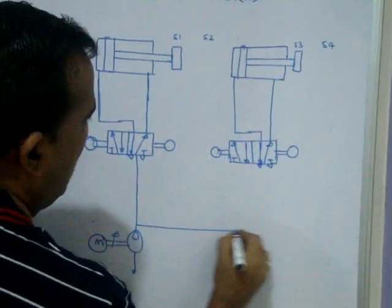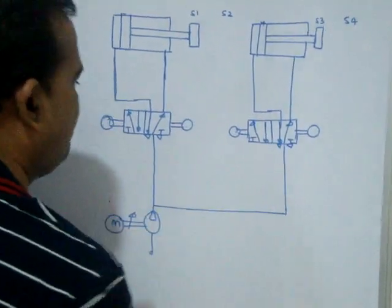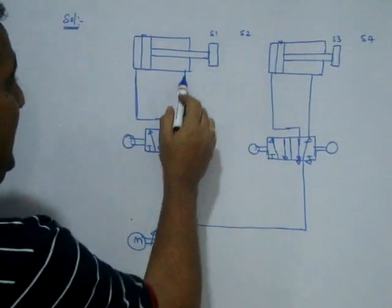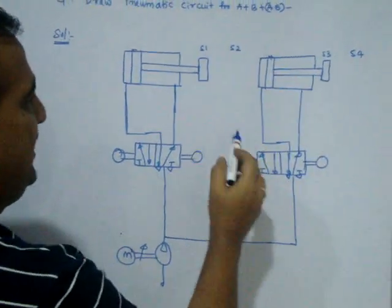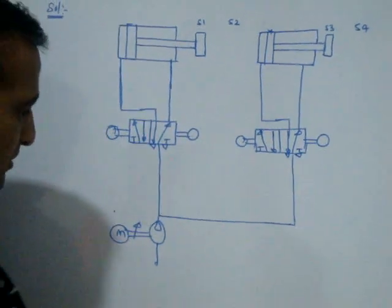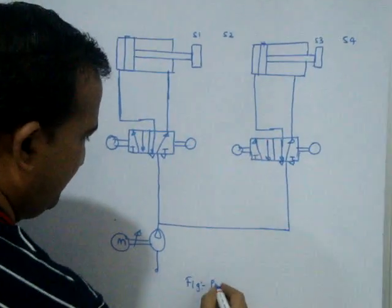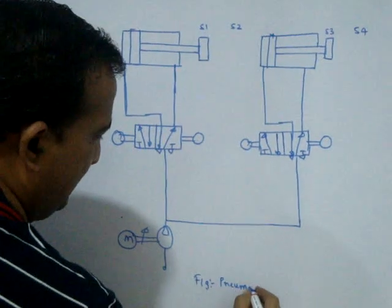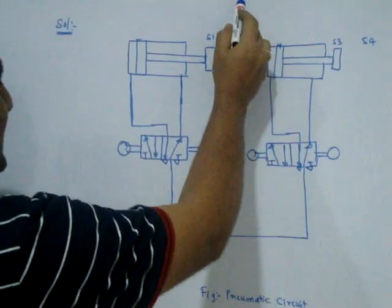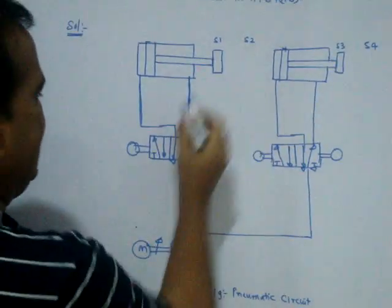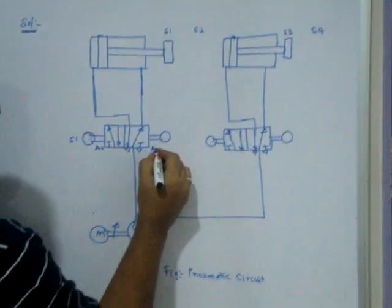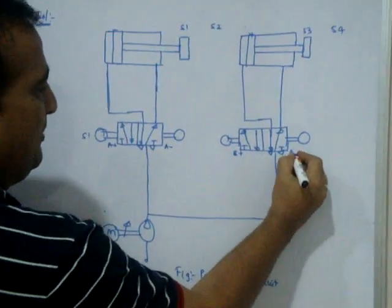As soon as the compressor starts, air goes to this side and this side. The piston is now at S1 and this piston is at S2. This figure is called the pneumatic circuit. First is A+. When A+ is on, the piston is at S1. This is called A+, this is called A-, this is called B+, and this is called B-.